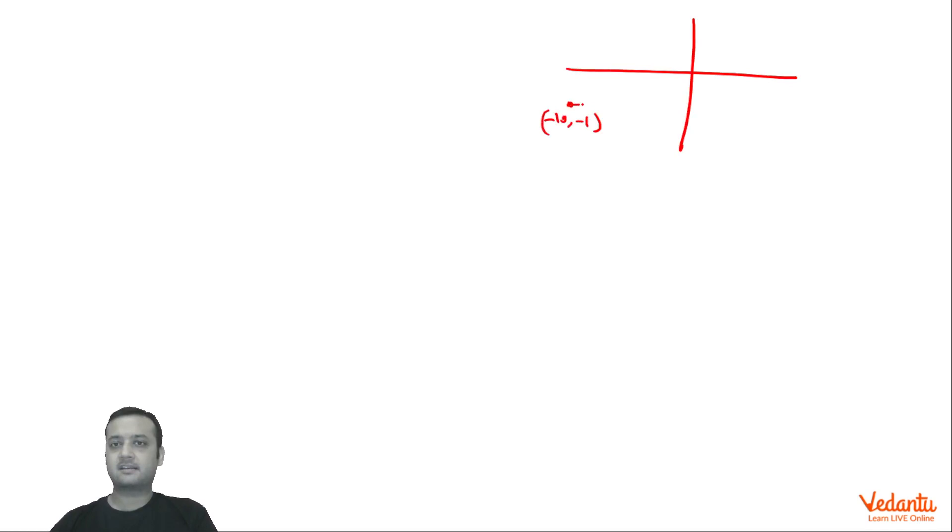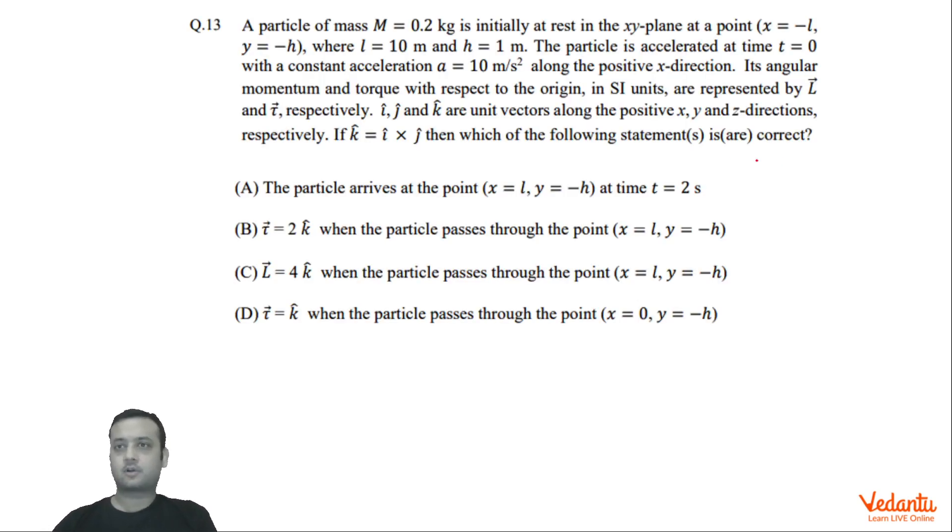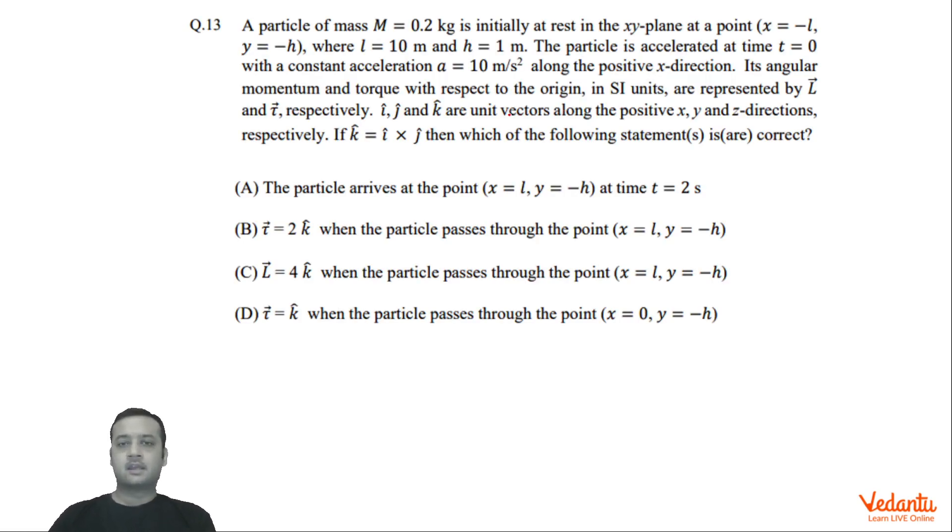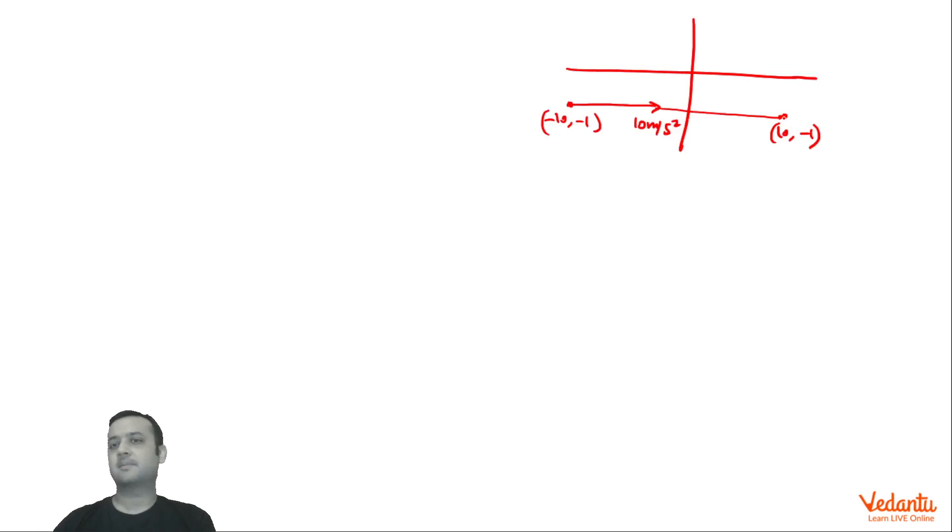It starts accelerating at a constant acceleration of 10 meter per second square along positive x, and when it reaches 10, -1, then we have to talk about some things. So basically t=0, it starts accelerating. Now, the first option asks at what time the particle will reach there. Initial velocity was zero, so this distance is 20, you can see 10 plus 10. So 20 = (1/2) × 10 × t², so we can see that t comes out to be 2 seconds.